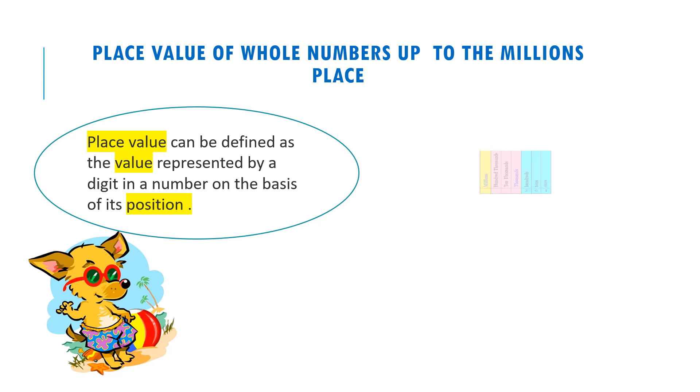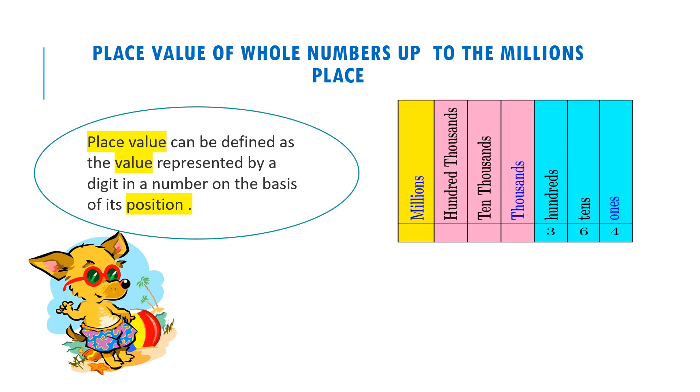Let's look at our place value chart. On our place value chart, we have these positions: ones, tens, hundreds, thousands, ten thousands, hundred thousands, millions.